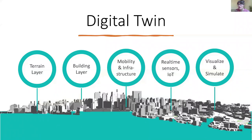Here's a basic overview of what comprises a digital twin. After listening to the previous presentation, I realized I'm missing the vegetation and probably the riverways. But basically, you have a terrain layer showing changes in elevation, a building layer which acts as the main structural layer of your digital twin, and mobility and infrastructure built in — the road networks, the pipes and sewage.